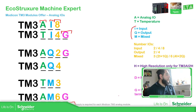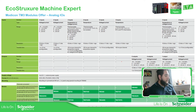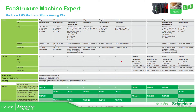Continuing with the presentation, we have different analog models depending on their characteristics. You can see the complete list of variables here depending on the number of inputs and outputs, the type, and then the range. That's just for you to check.